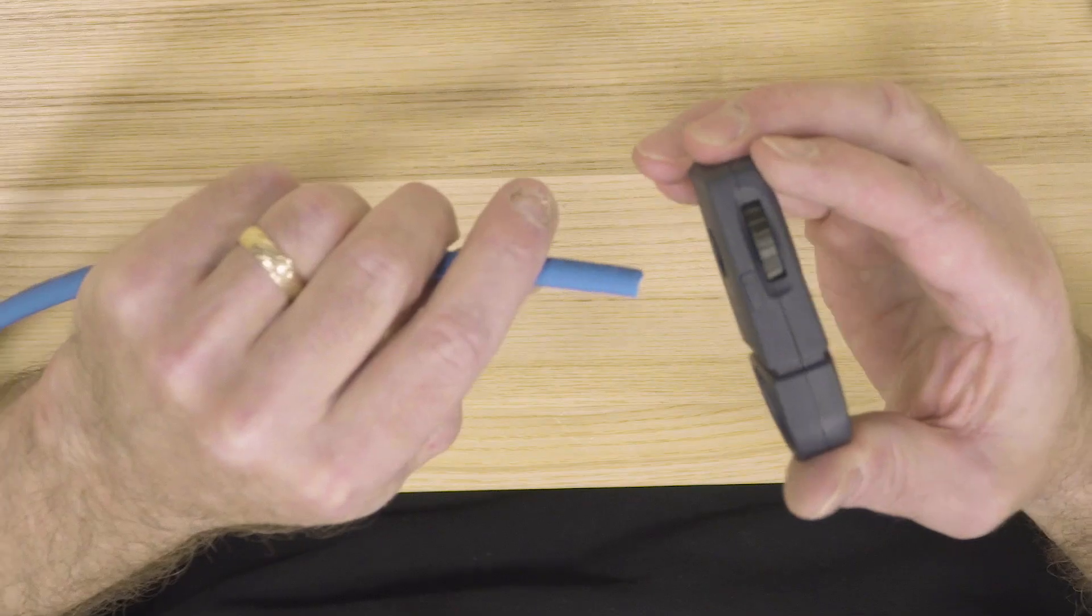The termination of this particular jack module requires two tools: our CJAST for stripping the jacket and our CWST, the snips for cutting the conductors. Let's get started.